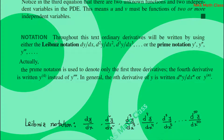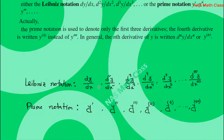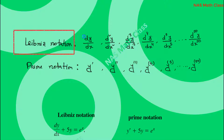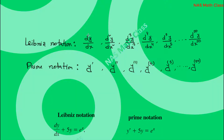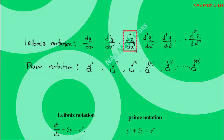In differential equations, we use two notations: Leibnitz notation and prime notation. In Leibnitz notation, if we differentiate y with respect to x once, we write it as dy/dx. If we differentiate y with respect to x twice, we write it as d²y/dx². If we differentiate three times, we write d³y/dx³, and so on.